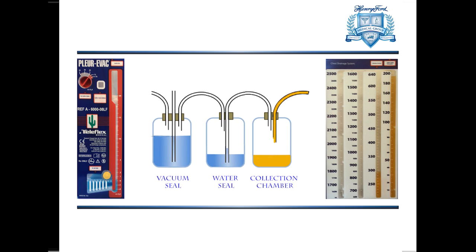The third bottle in the three-bottle system is recapitulated by the knob or dial that's on the Plurivac. And one should remember this because one sets suction on a Plurivac by using that knob and the wall suction should be at a maximal level.